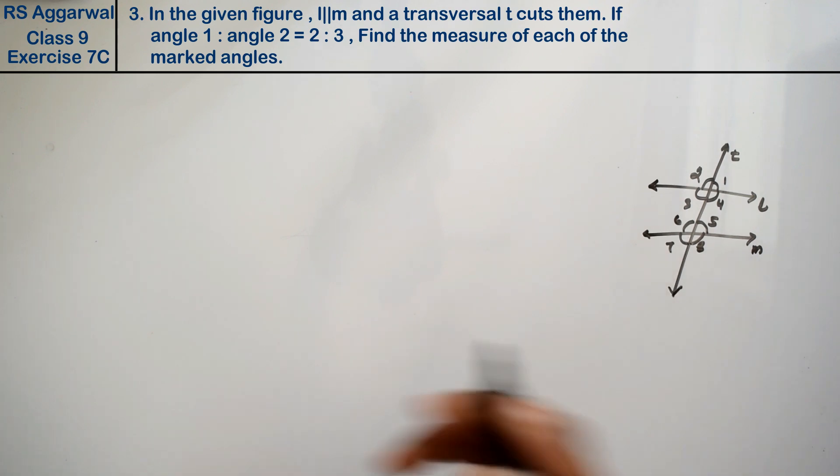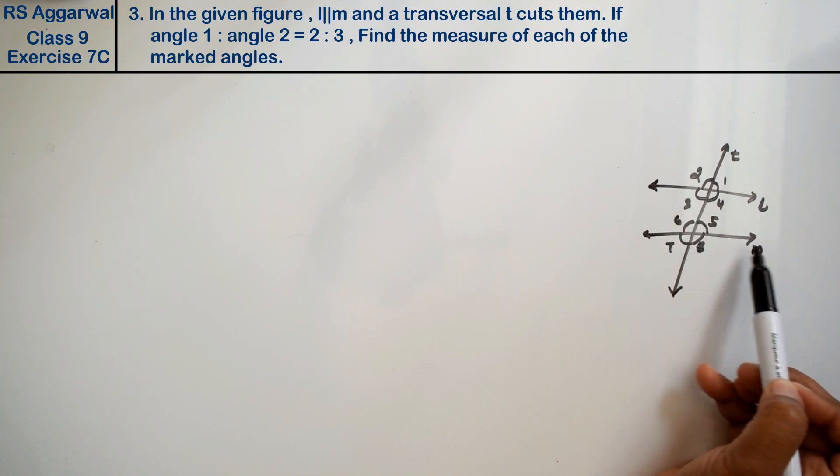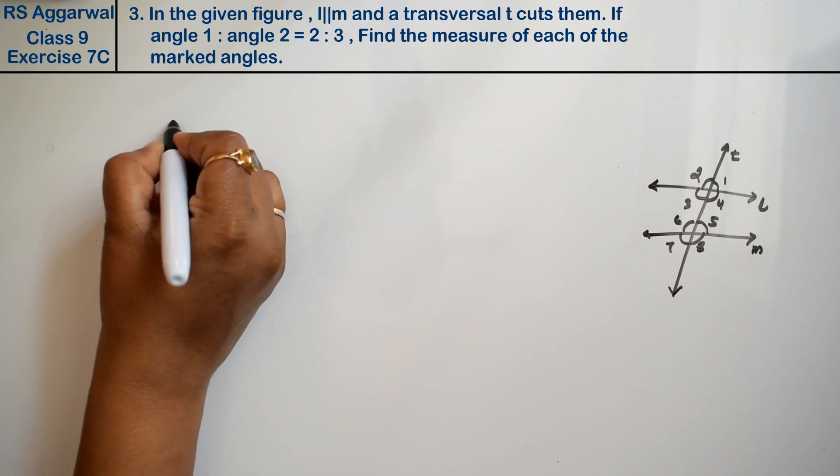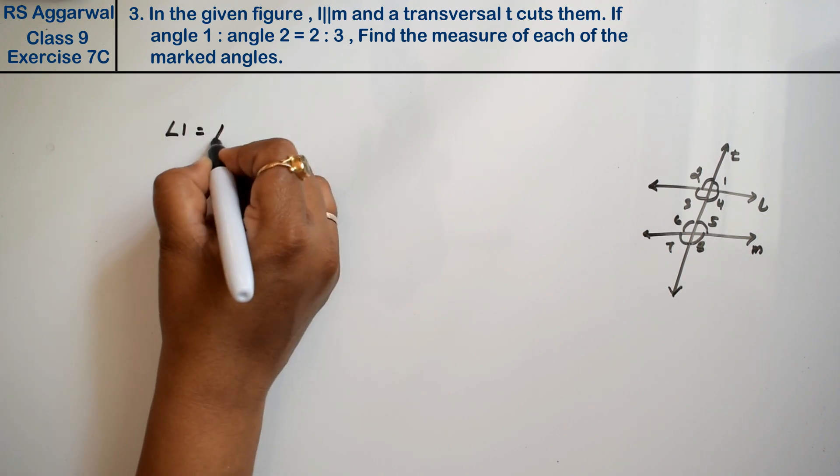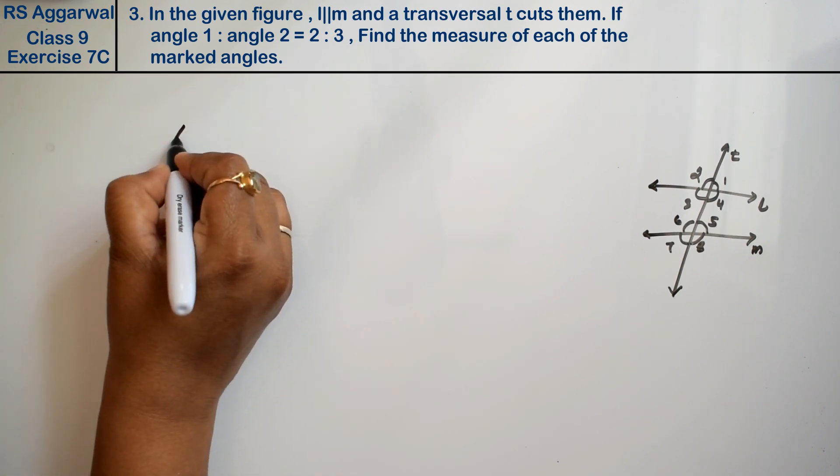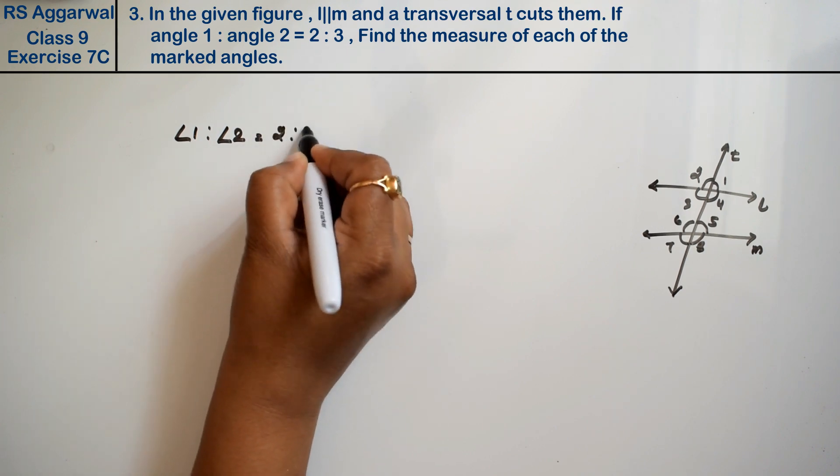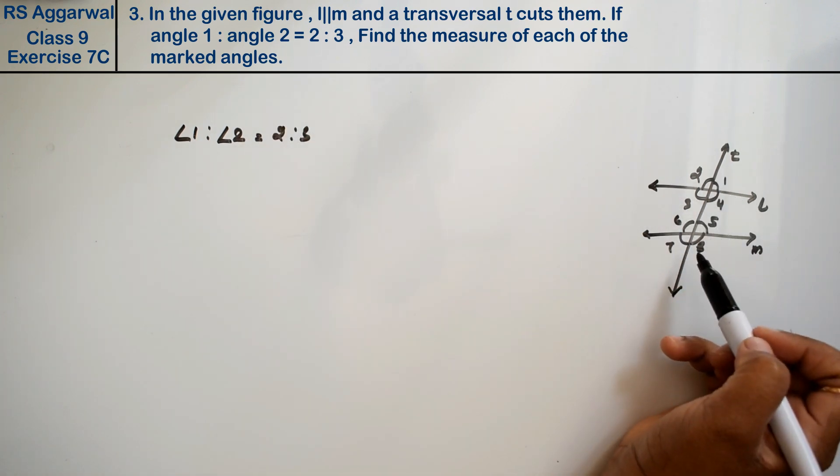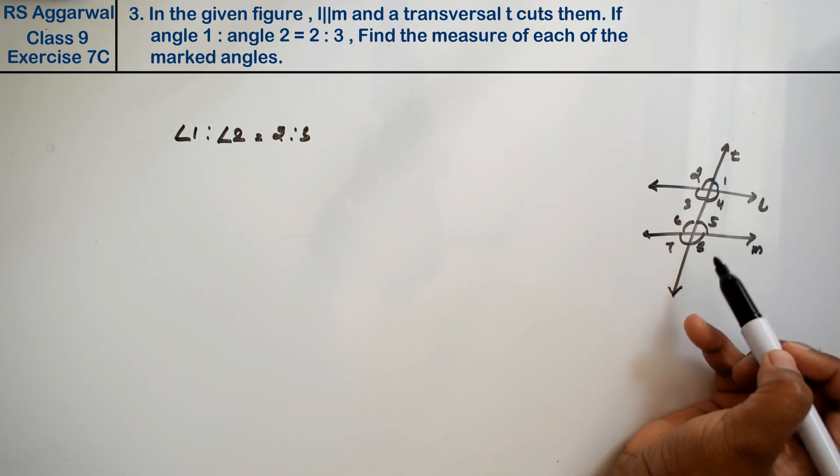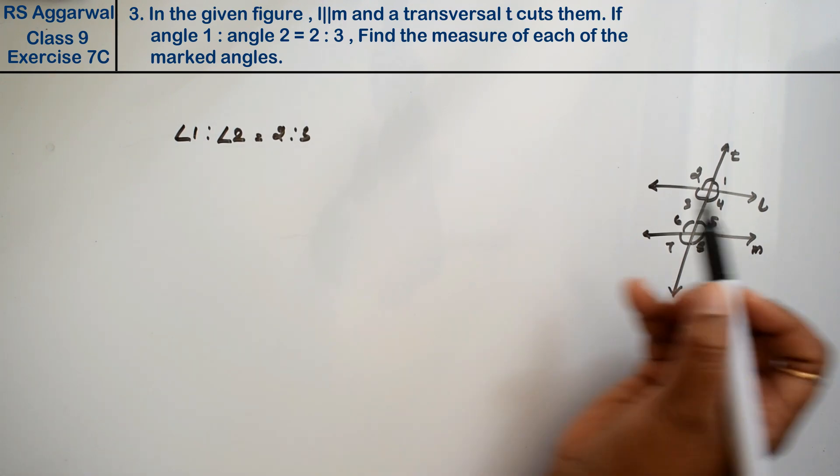Now what it's saying: in the given figure, L is parallel to M and T is the transversal. If angle 1 is to angle 2 equals 2 is to 3, find the measurement of each marked angle. We have to find that L and M are parallel and T is transversal.